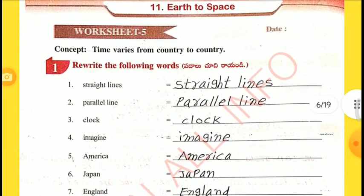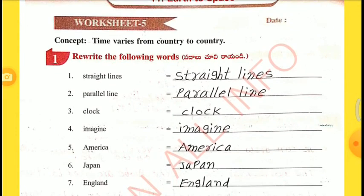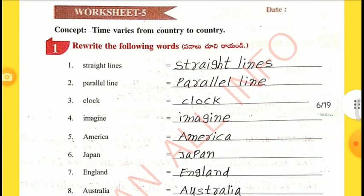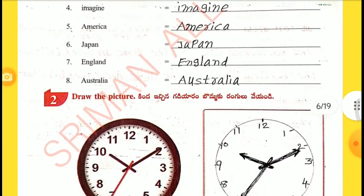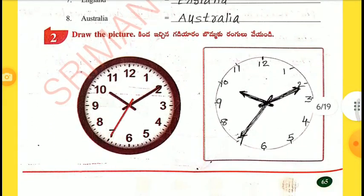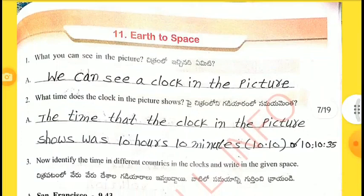Worksheet 5. Concept: Time varies from country to country. Relate the following: Straight lines, Parallel line, Clock, Image, America, Japan, England, Australia. Draw the pictures. What can you see in the picture? We can see a clock in the picture. What time does the clock in the picture show? The time that the clock in the picture shows was 10 hours 10 minutes 35 seconds.